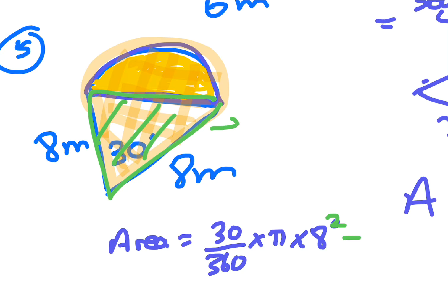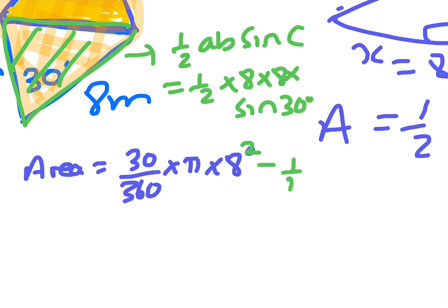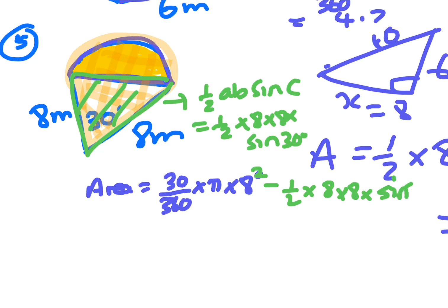So to get the area of the triangle, remember it's a half AB sine C. So it's a half times 8 times 8 times sine 30 degrees. This is going to be 0.76, and you don't want to do two rounded off answers. So you just put that straight in your calculator: 30 on 360 times shift pi times 8 squared minus 0.5 times 8 times 8 times sine 30, and you get 0.76, that's to two decimal places meters squared.